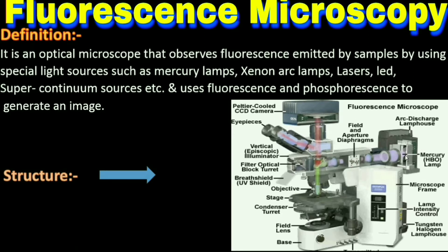The light source should be a mercury lamp or xenon arc lamp. Here we are using the mercury lamp. The light passes from here and reaches this filter. After the filter, it produces only monochromatic light, which then reaches the beam splitter — also called the dichroic mirror. The dichroic mirror splits the beams, and when it reaches the dichroic mirror, it diverts the light through the objective lens to reach the sample.